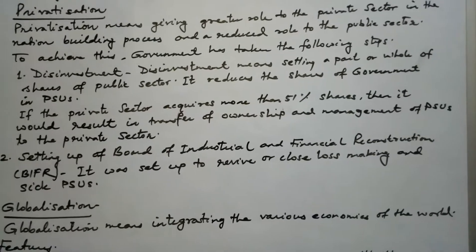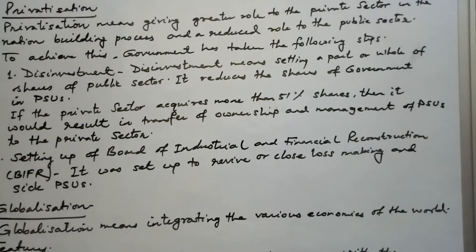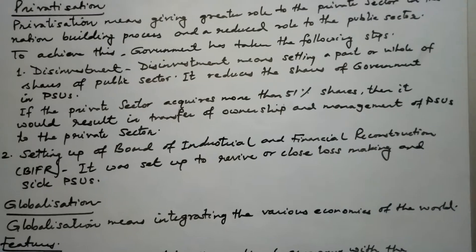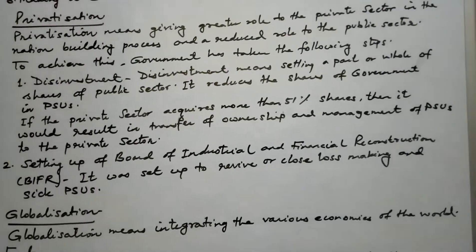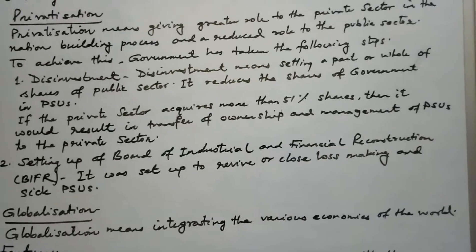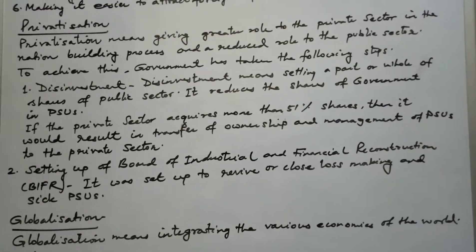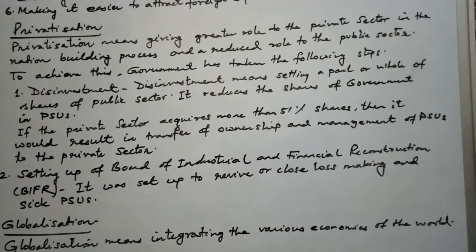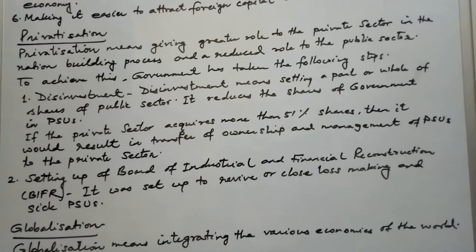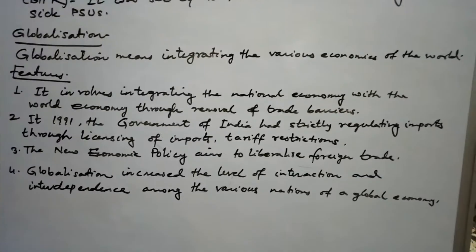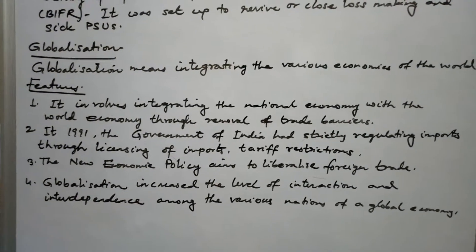The second step under privatization was the setting up of BIFR — the Board of Industrial and Financial Reconstruction. BIFR was set up to revive or close loss-making and sick public sector undertakings. Those in loss had to be revived if possible; if they could not be revived, they were to be closed.